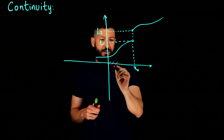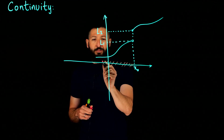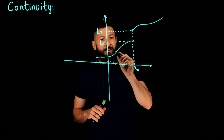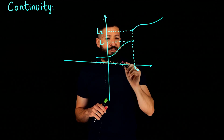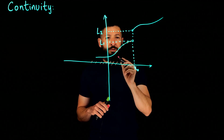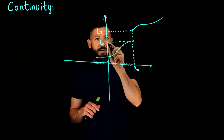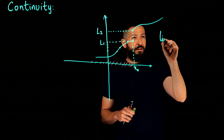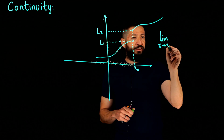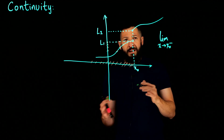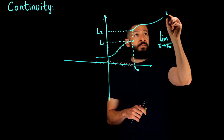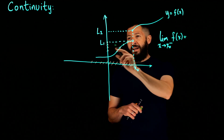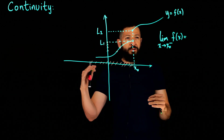Let's take a look at what happens whenever we approach X from the left. We're going to be approaching on this interval, approaching X_naught from this direction. As X approaches X_naught, we see that our y-coordinates are going to be approaching L1. We denote that by saying the limit as X approaches X_naught from the left — the negative sign denotes from the left — of f(x) is L1.